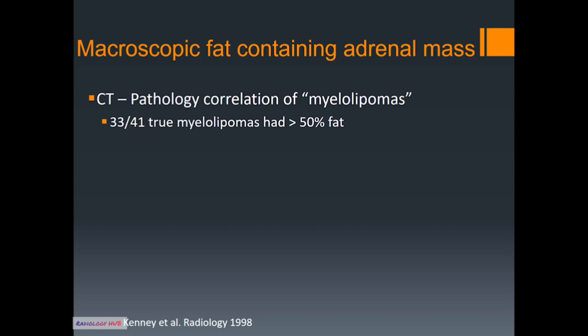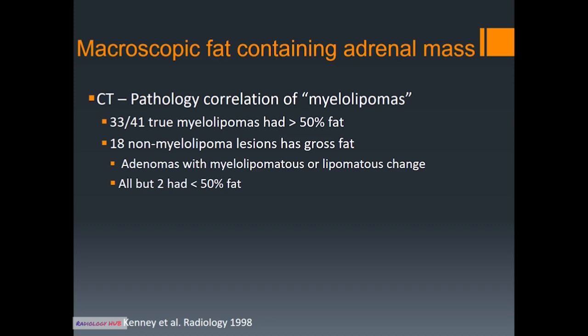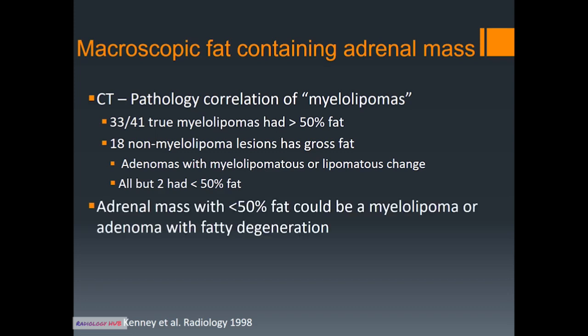It turns out that most true myelolipomas had greater than 50% fat in the lesion, but importantly they had 18 non-myelolipoma lesions with gross fat. These were adenomas with myelolipomatous or lipomatous change within them, and importantly all but two of these had less than 50% fat. So the conclusion was that an adrenal mass with small amounts of fat could still be a myelolipoma, but it can also be an adenoma with fatty degeneration.